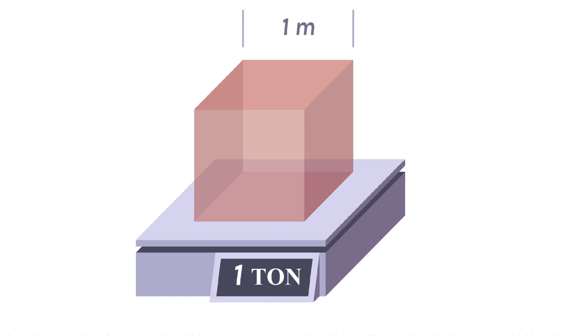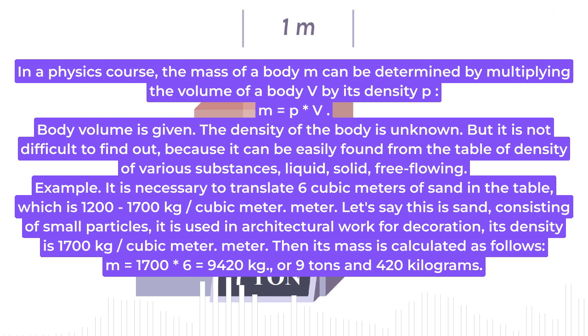Instructions, Step 1. In a physics course, the mass of a body m can be determined by multiplying the volume of a body v by its density p. m equals p asterisk v.